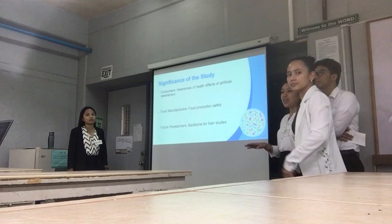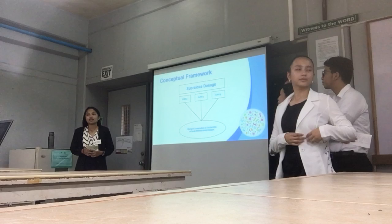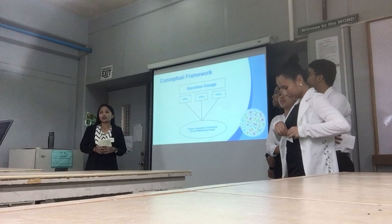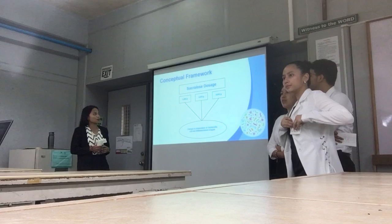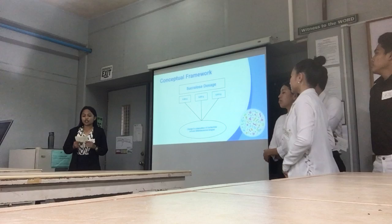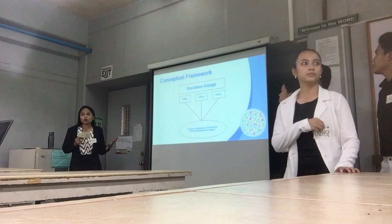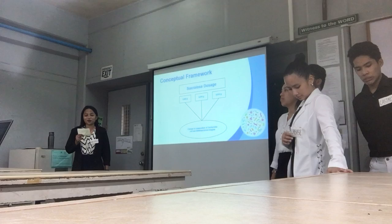Now we will proceed to the conceptual framework. Shown in this diagram are the variables to be used in conducting this study. The sucralose dosages will be 0.005 grams, 0.010 grams, and 0.015 grams. After a thorough process of observation, the change in composition that will be observed in the two microbiota — Escherichia coli and Bifidobacterium — will be determined.